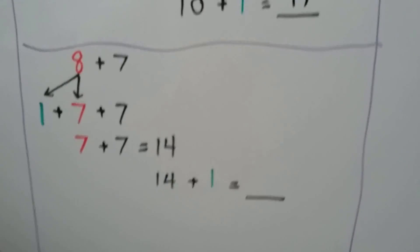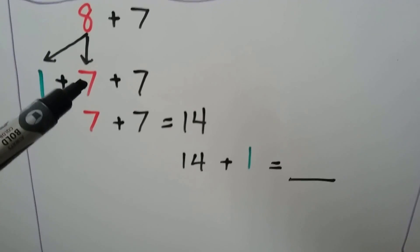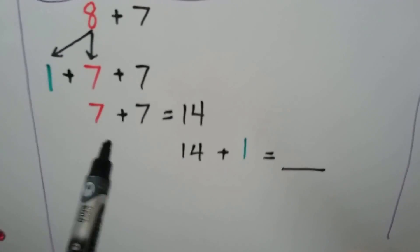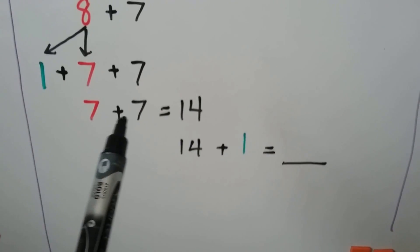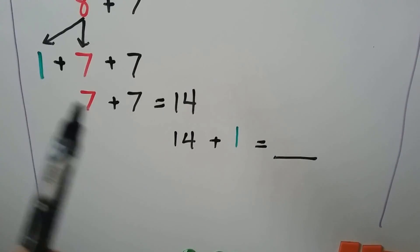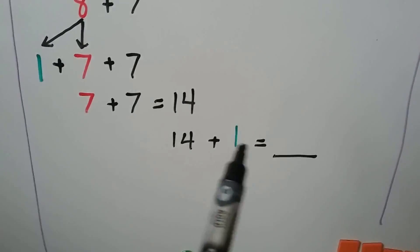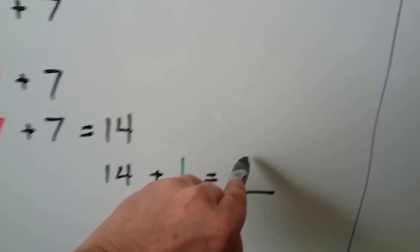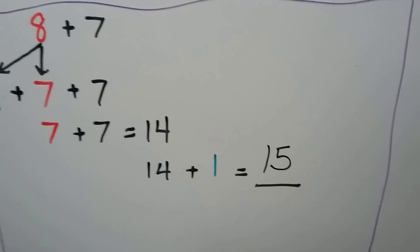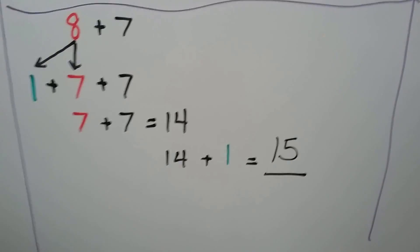8 plus 7: we break apart the 8 into a 1 and a 7. Now we have doubles — 7 plus 7. And if we know 7 plus 7 is equal to 14, we can add the one more. 14 plus 1 is equal to 15, which means 8 plus 7 is equal to 15.